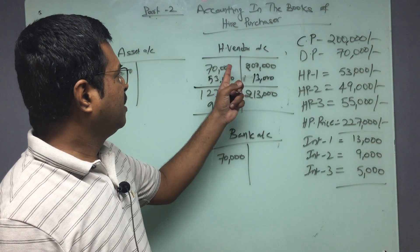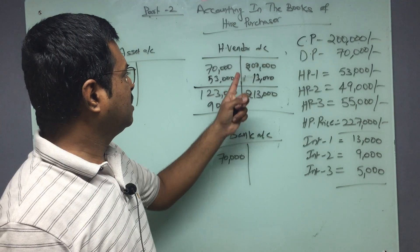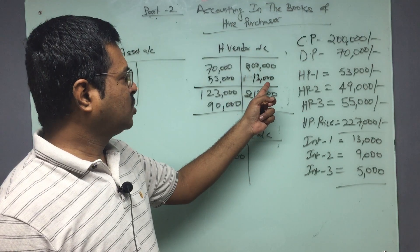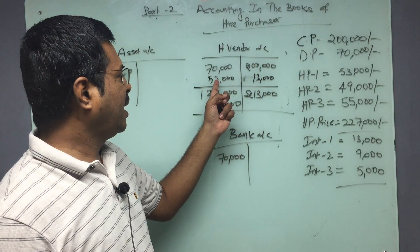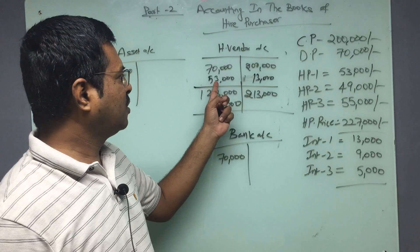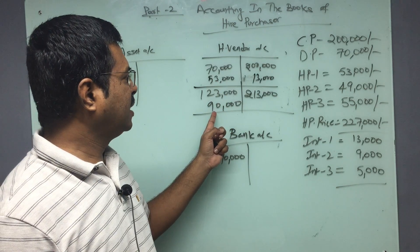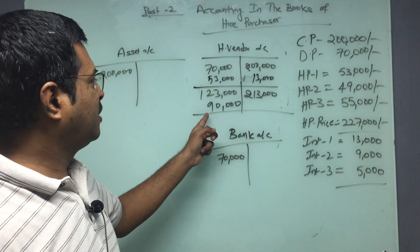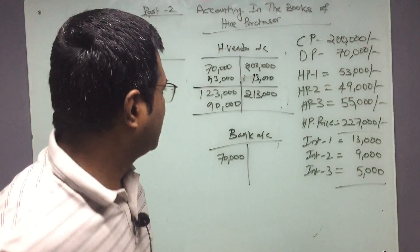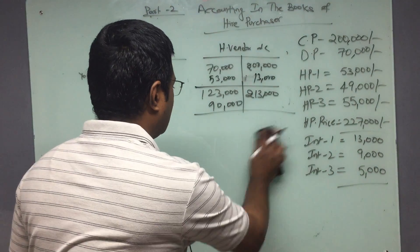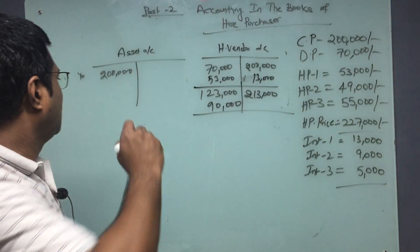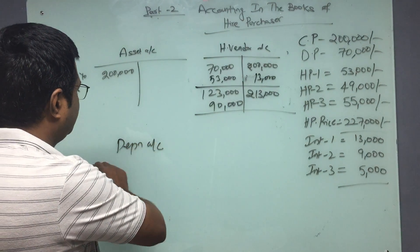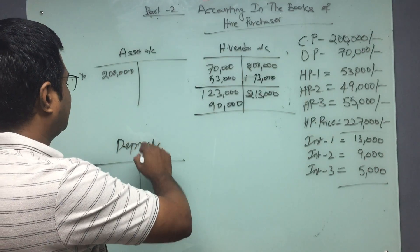I have given credit of 2 lakhs, made a down payment of 70,000, and created a liability of 13,000 interest on the first installment. I have paid the first installment of 53,000, so my closing balance at the beginning of the second year is 90,000. This 90,000 will be carried forward to the next year.